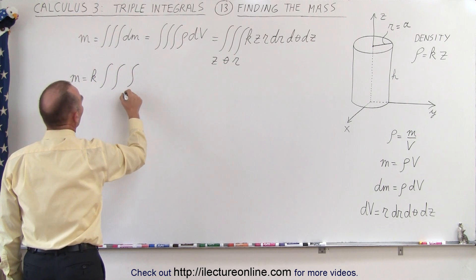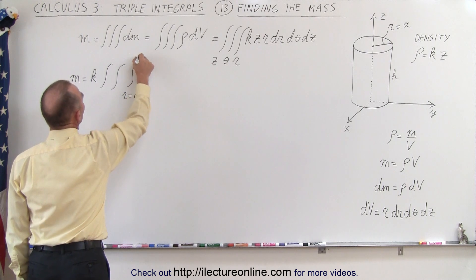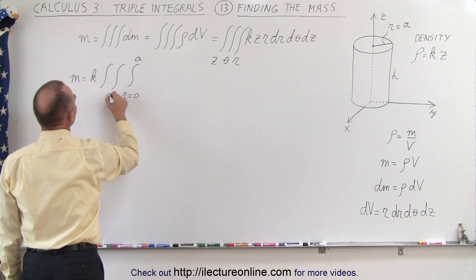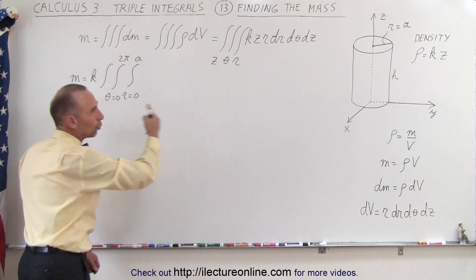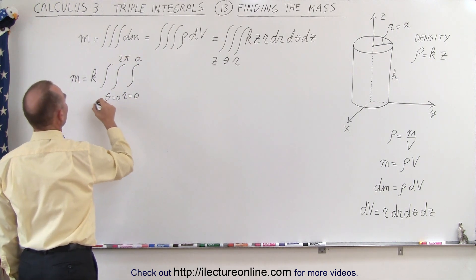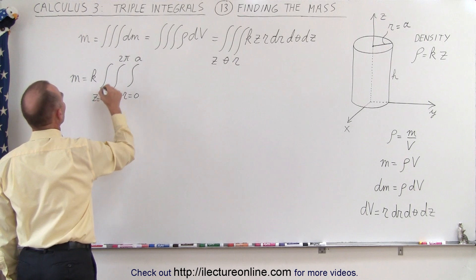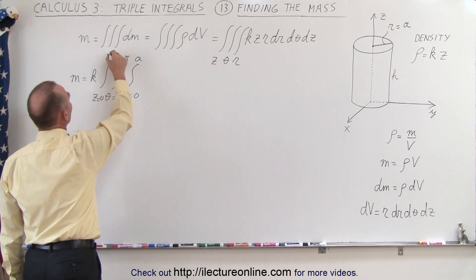We can say that r is going to go from 0 to the radius a, θ is going to go from 0 to 2π because we're integrating all the way around the cylinder, and z is going to go from 0 to the height of the cylinder, which we call h.